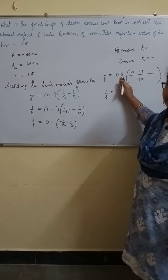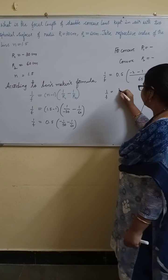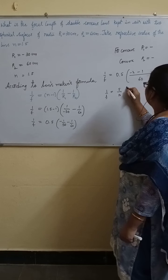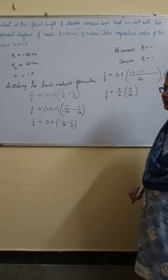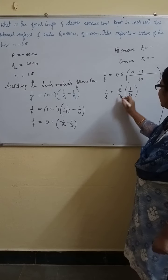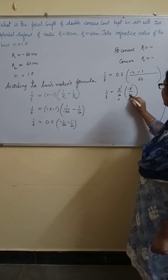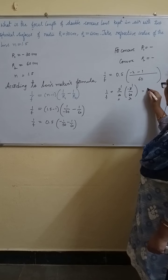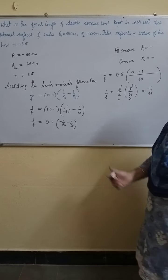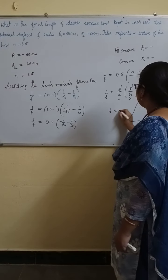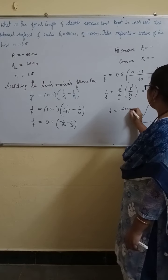0.5 can be written as 5 by 10. Minus 3 by 60. 5 ones are, 5 twos are. 3 ones are, 3 twenties. So, how much it is? Minus 1 by 40. By taking reciprocal, F is equal to minus 40 centimeters.